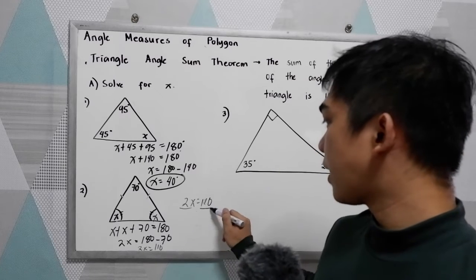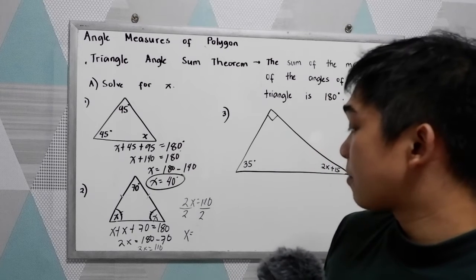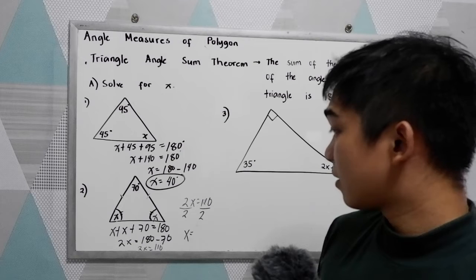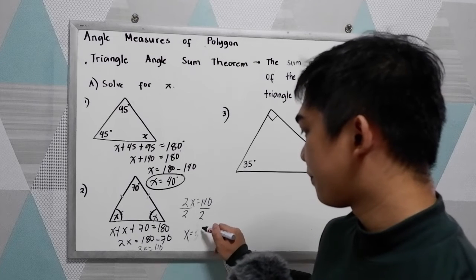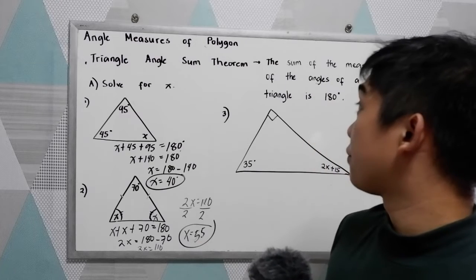So divide by 2. x is equal to 110 divided by 2, that is 55. So x is equal to 55.